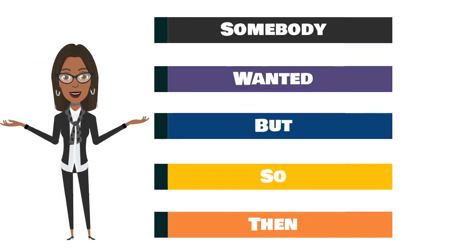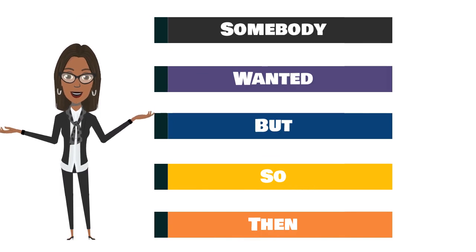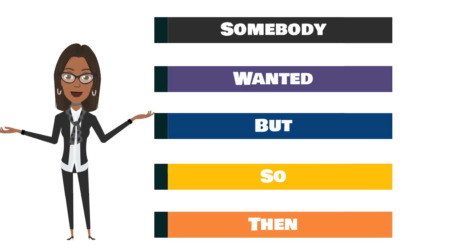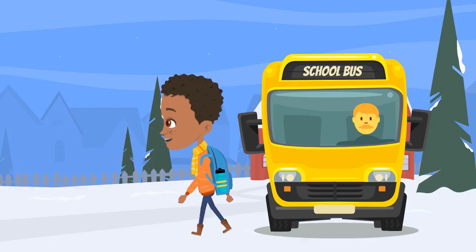Okay friends, I'm going to tell you a story and then following the story, we are going to summarize the story together using the model: Somebody, Wanted, But, So, Then. It was a beautiful snowy day and Jalen could not wait to get off the school bus, walk home, and put his things down so he could go outside to play in the snow with his friends.